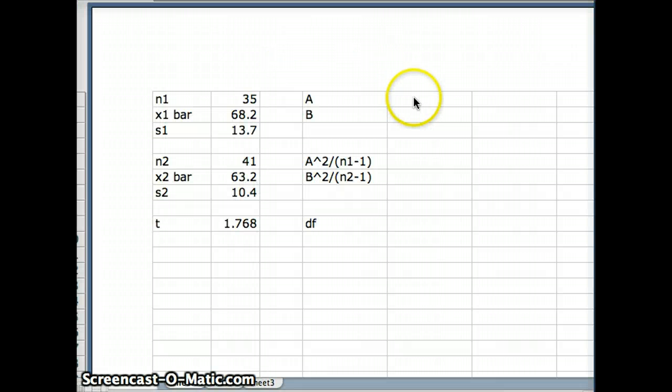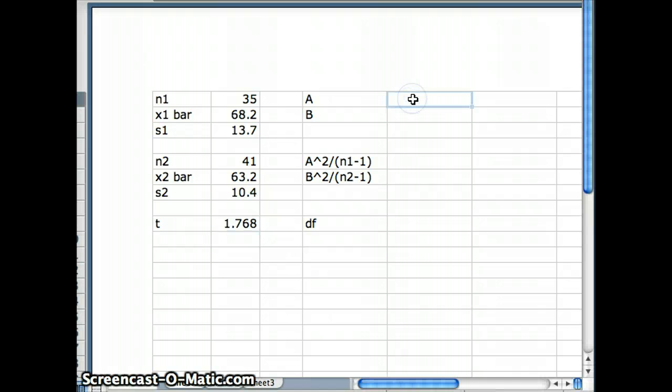So coming back to Excel, defining a is going to equal s₁² over n₁. And defining b, that's going to equal s₂² over n₂. And that now gives us a and b.